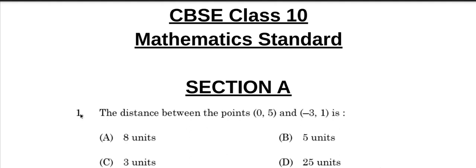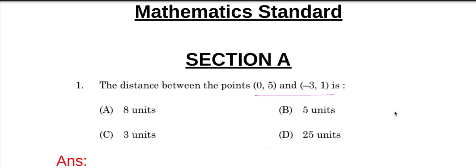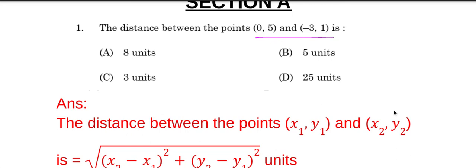Section A, question number one: The distance between the point (0, 5) and (-3, 1) is. We have to find the distance between these points, so let's find the answer.